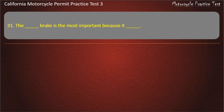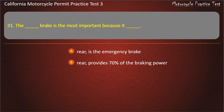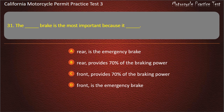Question 31. Which brake is the most important? Rear — it is the emergency brake, rear — it provides 70% of the braking power, front — it provides 70% of the braking power, or front — it is the emergency brake. Answer: Front provides 70% of the braking power.